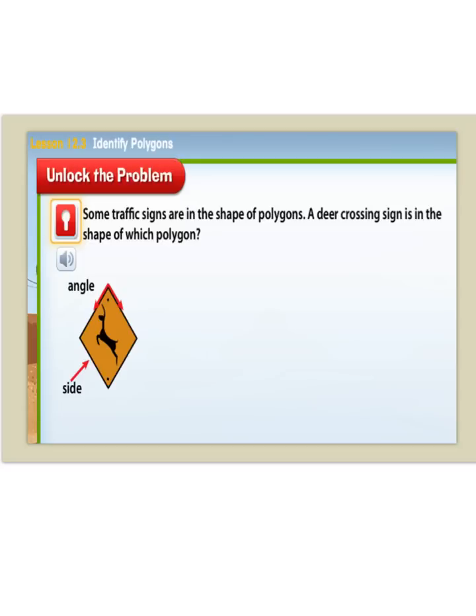I need to figure out how to name this polygon. Well, if I count my sides, I have one, two, three, four. So I have four sides. I know that that is going to be a quadrilateral. So this shape is a quadrilateral.